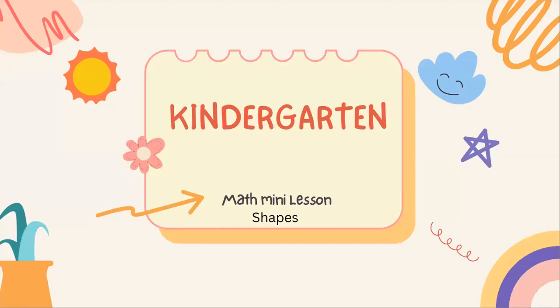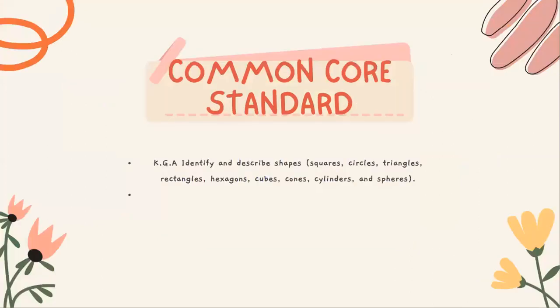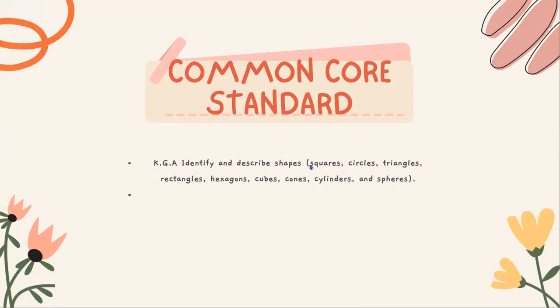Welcome, students! I am so glad you could join me for this kindergarten math mini lesson all about shapes. Today we are going to be focusing on Common Core standard KGA, which is identify and describe shapes: squares, circles, triangles, rectangles, hexagons, cubes, cones, cylinders, and spheres. Today we are going to take a peek at squares, circles, and triangles.